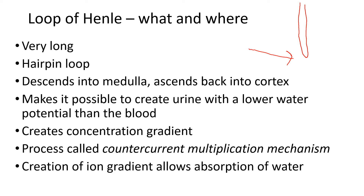You've got part of your nephron in the cortex - the glomerulus, Bowman's capsule, proximal convoluted tubule, and distal convoluted tubule are all in the cortex. The Loop of Henle goes down into the medulla. So if we drew a line, everything else would be above in the cortex and this would be the medulla - these tubules go down into the medulla.